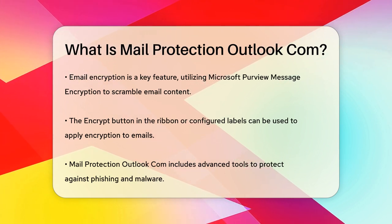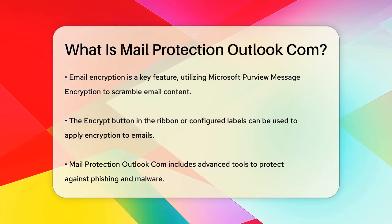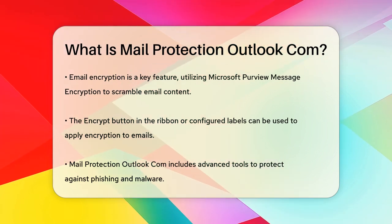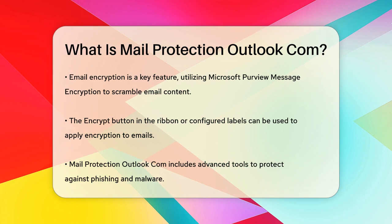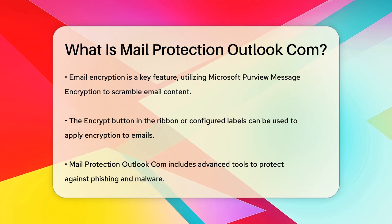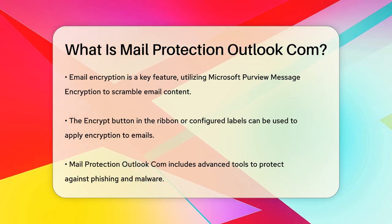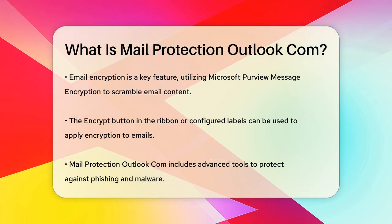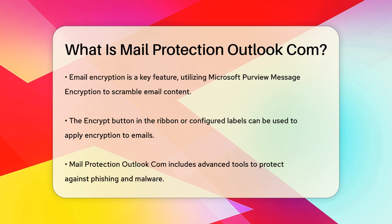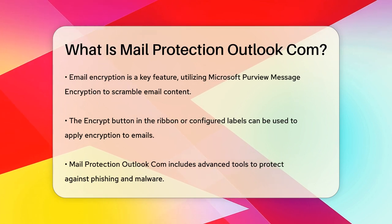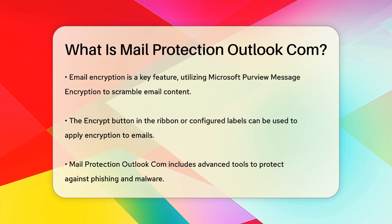Outlook.com includes encryption options like Microsoft Purview Message Encryption, which converts your email from readable plain text to scrambled cipher text. This ensures that only the intended recipient can read the email. You can apply this encryption using the Encrypt button in the ribbon or through configured labels.